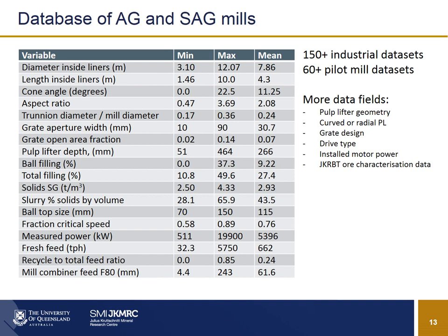In the new modeling we also wanted more information about grates, pulp lifters, drive types, and MPQ characterization, all of which had to be found for data sets where those aren't normally reported in JKSIMMET — sometimes found in a report or other source. Having gone through this exercise, we now have 150 industrial data sets as well as the original 60-plus pilot mill data sets. They cover mills from 10 to 40 foot in diameter, a wide range of aspect ratios, grate apertures from 10 to 90 mm, ball filling from fully AG mode up to near ball mill, and power from half a megawatt to 20 megawatts — quite a nice range for doing the modeling work.